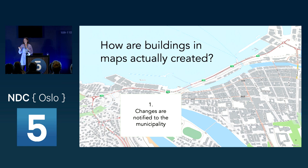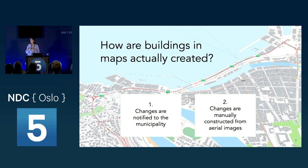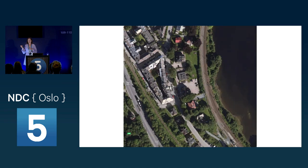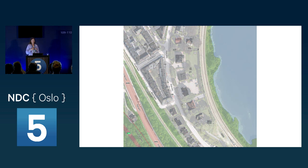There's a second way that changes are made: looking at what is visible in aerial images and then manually constructing buildings from that. Someone has to sit and manually look through all the aerial images, find differences, and try to make the map correspond to what is visible.